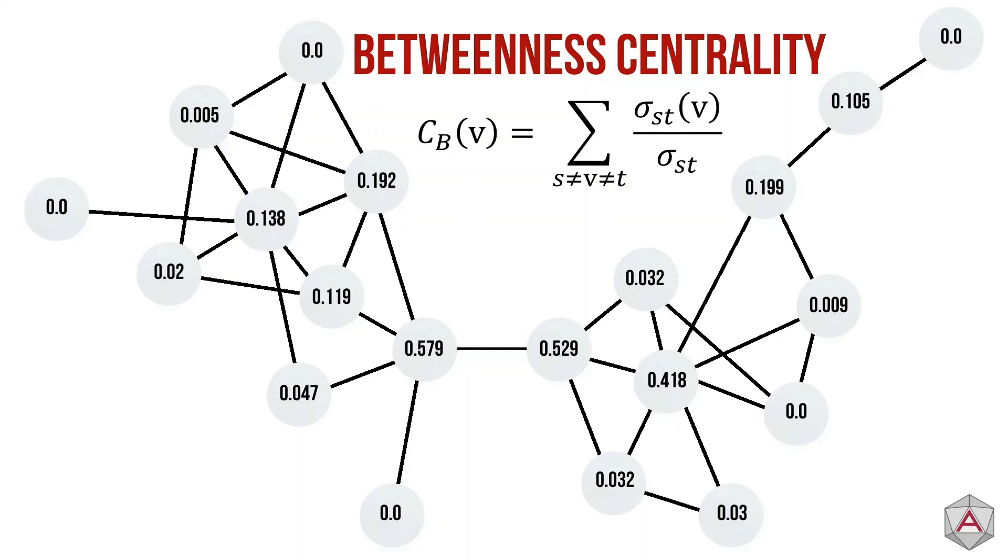Betweenness can tell us which nodes act as bridges between nodes and the graph. These have the most influence on the connectivity of the graph.